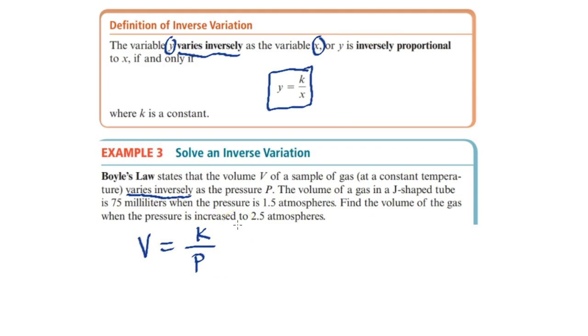Similar to the three-step process from the last video, we found the equation. Now we need to plug in the given information, which would be v and p to solve for k. The volume of a gas in a J-shaped tube is 75 milliliters, and the given pressure is 1.5.